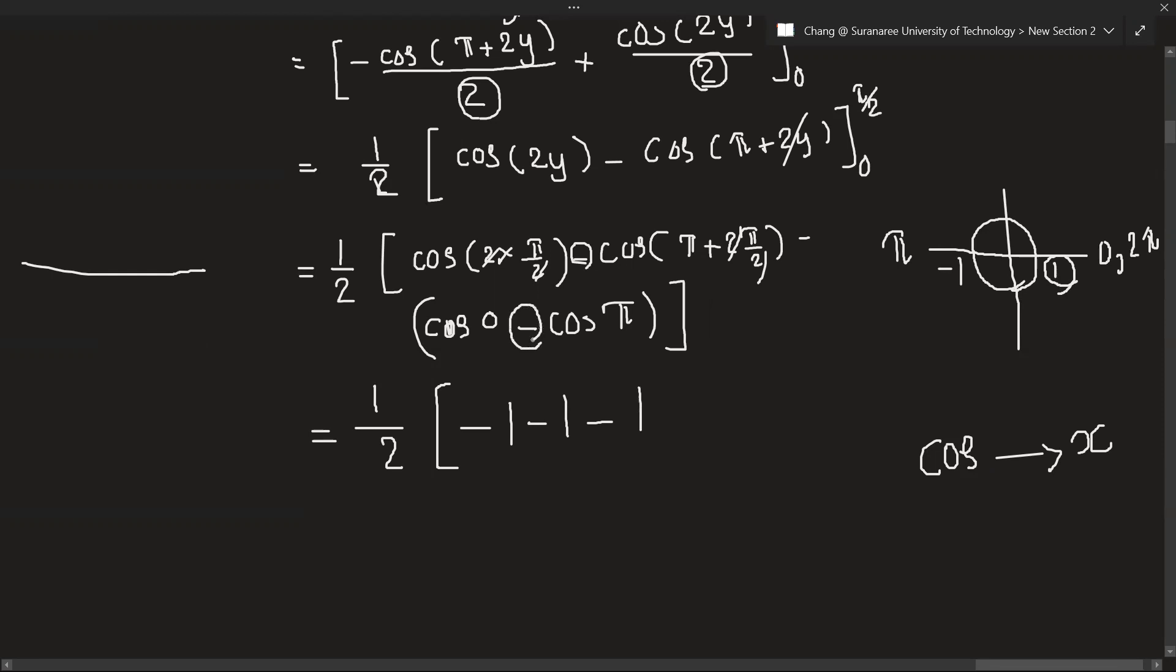This minus and this minus, it will be plus, positive. But the value of cos pi is minus 1, so it will just get minus 1. Okay, so let's solve that.